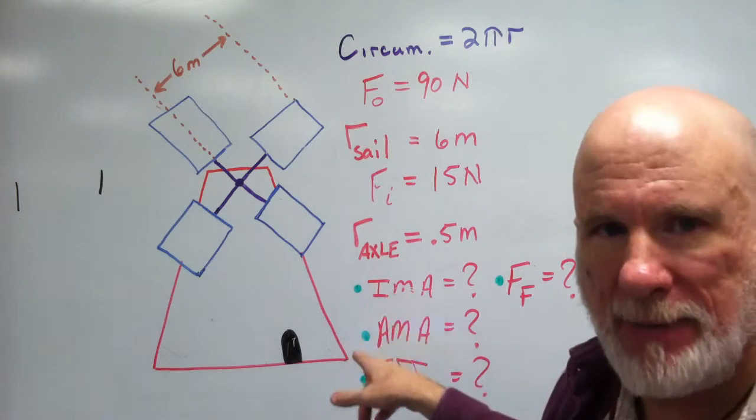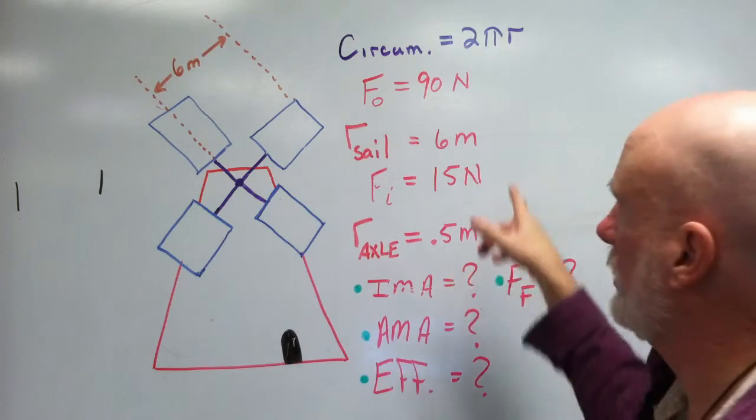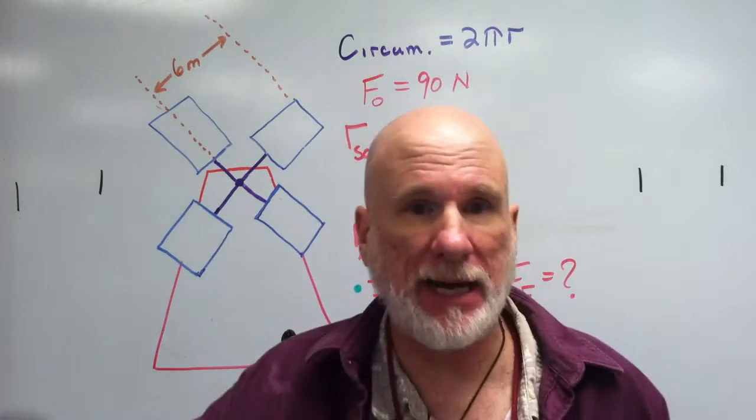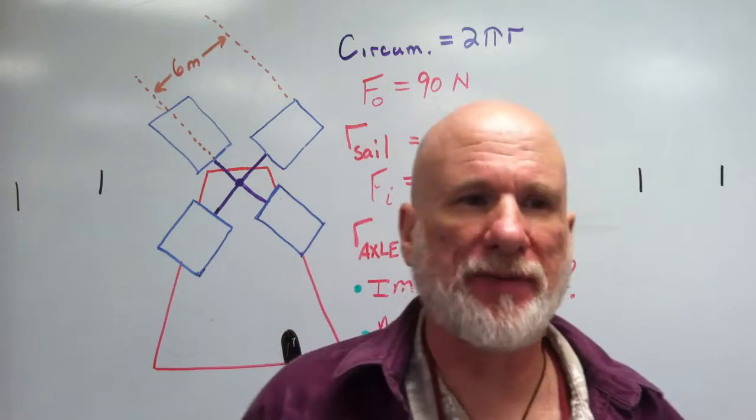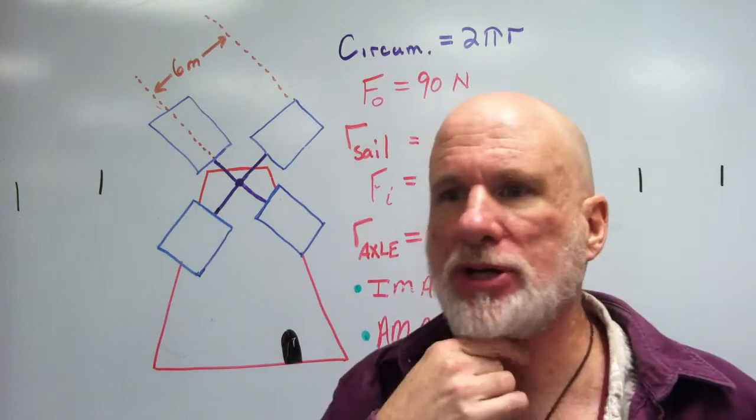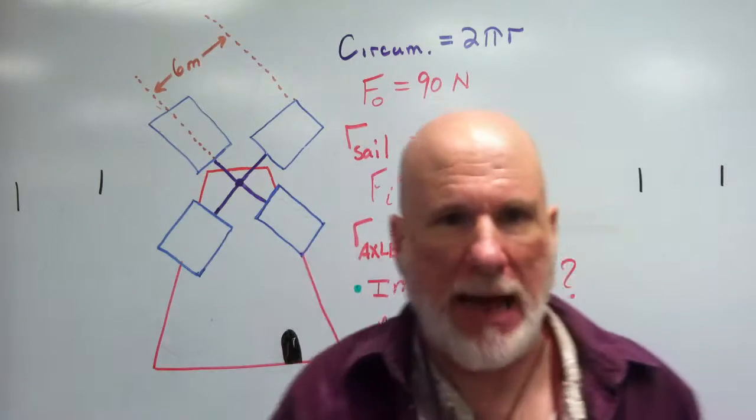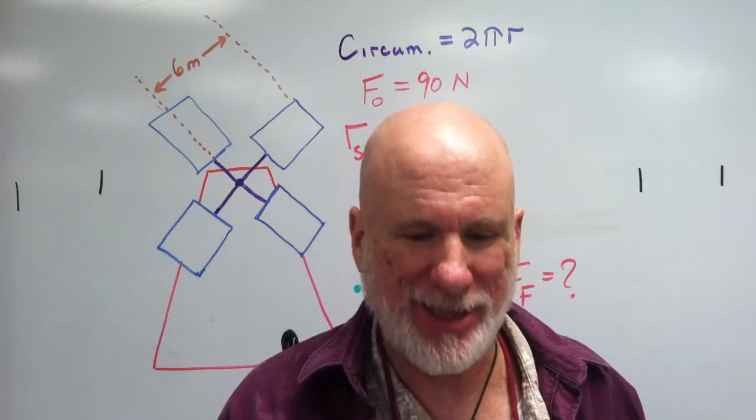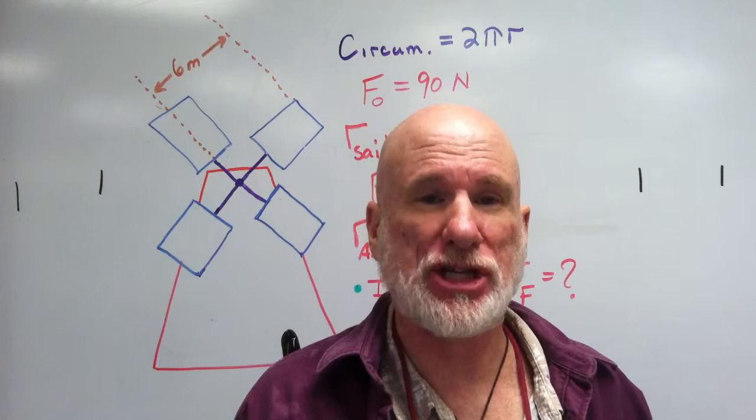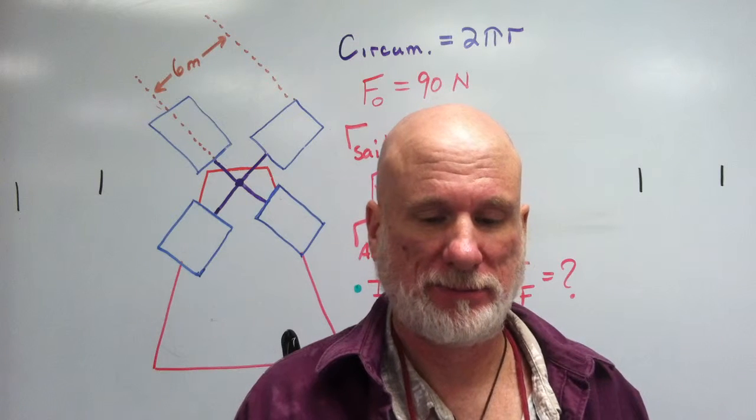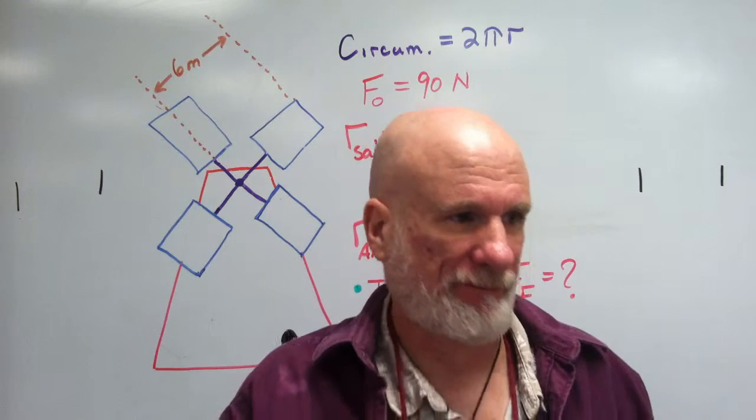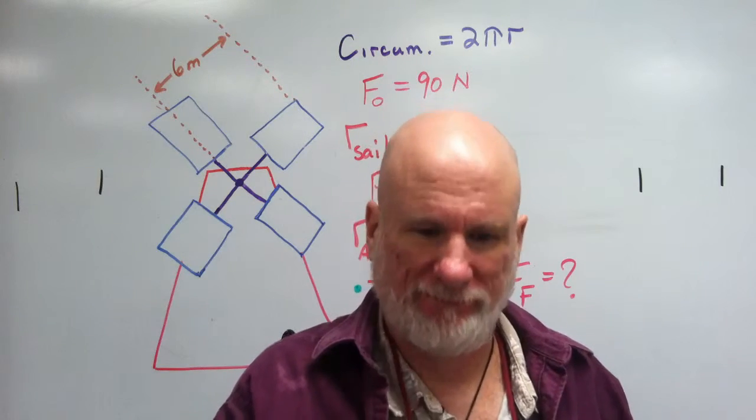I want to know IMA, AMA efficiency, and the force of friction. Circumference of a circle is 2 pi r, and see how you do. Let's do this a little bit at a time. The first thing I want you to do is, I want you to do the AMA, and then we'll come back. Okay? And let's listen to Hank, the Knife, and the Jets. Yes, Peter Gunn. Next.